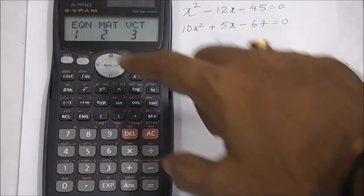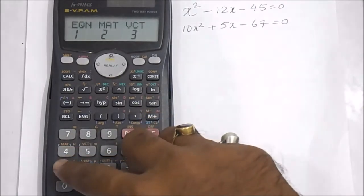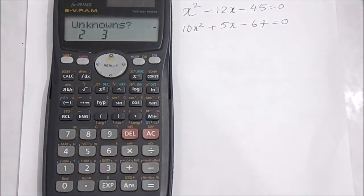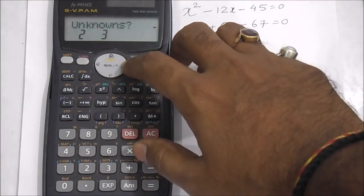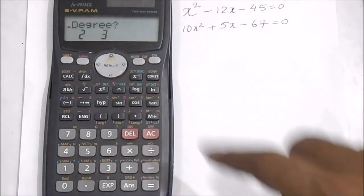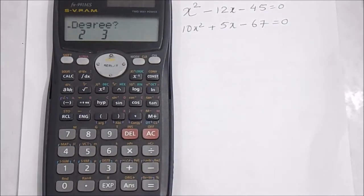Select EQN (equation) by pressing 1. You'll get options for unknowns 2 and 3 for linear equations. Press the right button to see degree 2 and 3 options. For quadratic equations, the degree is 2, so press 2.